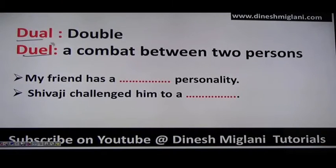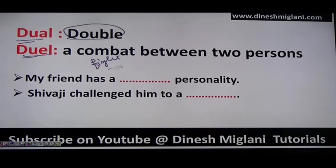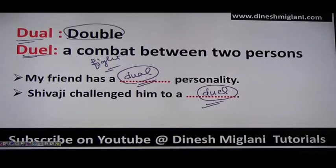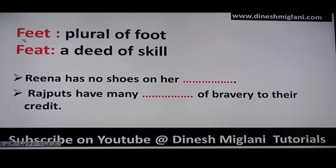Next: dual (D-U-A-L) means double — for example, dual personality. Duel (D-U-E-L) is a combat or fight between two persons. Examples: 'My friend has a dual personality — sometimes very talkative, sometimes cool and calm.' 'Shivaji challenged him to a duel' — meaning a fight between two persons.